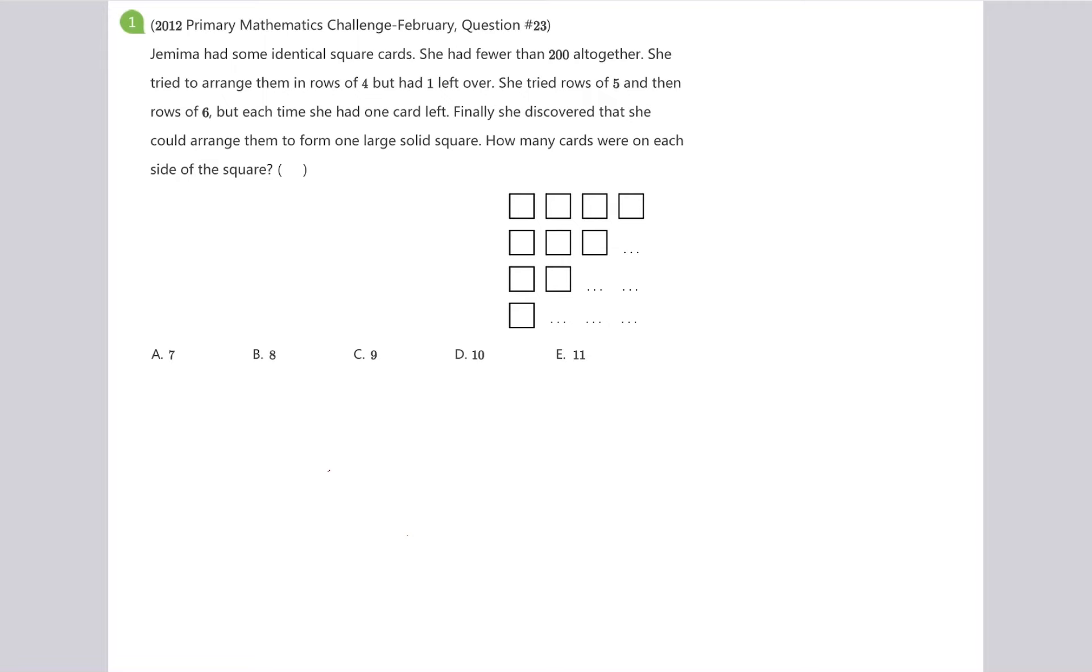First of all, the total number of cards must be a square number, because she can arrange them in one large solid square. And then, we know that if she arrange them in rows of 4, 5 or 6, she always has one card left over.